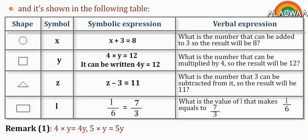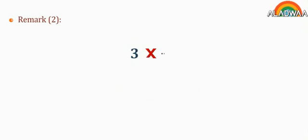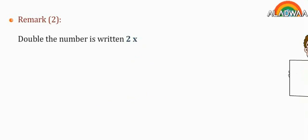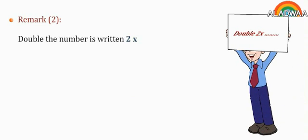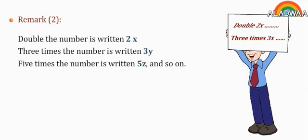Remark number 1: 4 times y equals 4y; 5 times y equals 5y. Remark number 2: 2x is double a number; 3x is 3 times a number. Double the number is written as 2x; 3 times the number is written as 3y; 5 times the number is written as 5z, and so on.